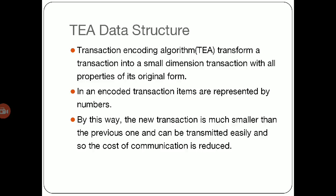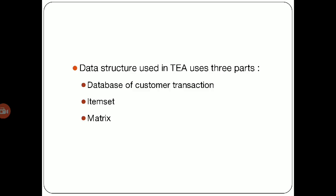Whenever this transaction is reduced in the form of a number or any other pattern, its original properties also remain in an encoded transaction. Items are represented by numbers. By this way, the new transaction is much smaller than the previous one. Because of this, transactions can be transmitted easily, and our ultimate goal is obtained—that is, the cost of communication is reduced.